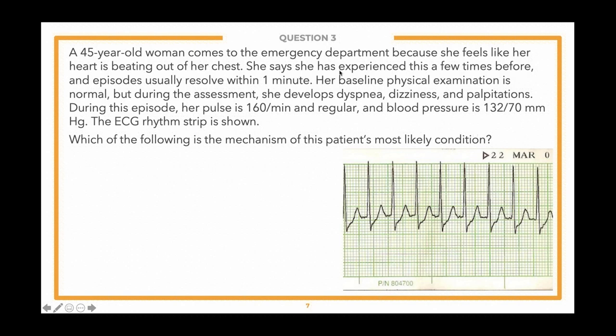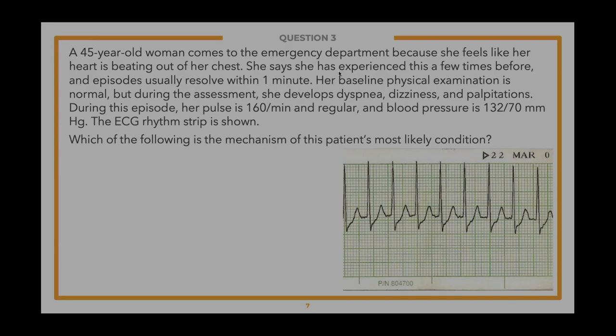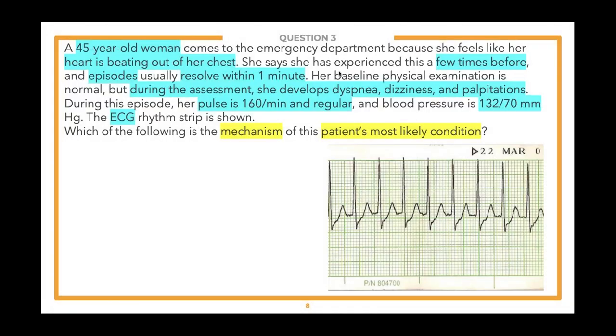We're going to go ahead and show you what we think are the important clues in this vignette. Starting off, the first thing we're given are demographics — this is a 45-year-old woman. Oftentimes in these clinical questions that's the first thing you'll be given, so you want to make note of that because it can automatically help clue you in as to what things you need to be thinking about. Then they tell you why the patient is coming in — in this case, she says her heart is beating out of her chest — which are the presenting signs and symptoms.